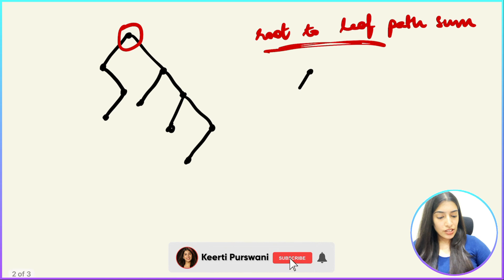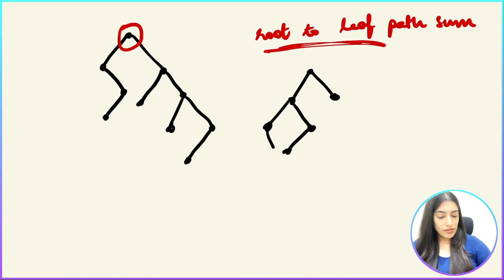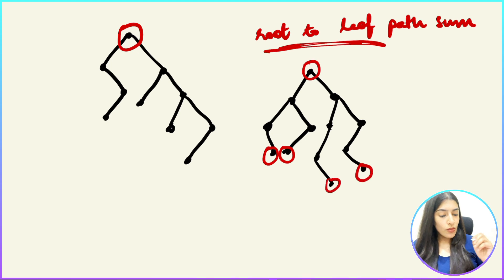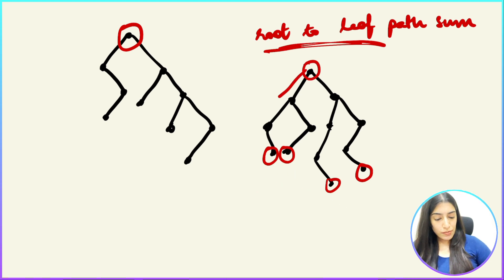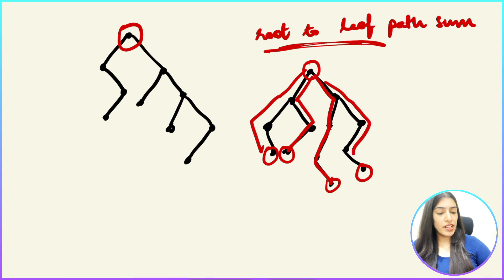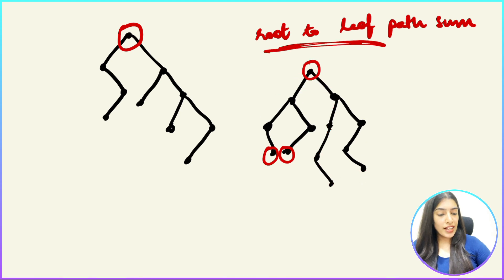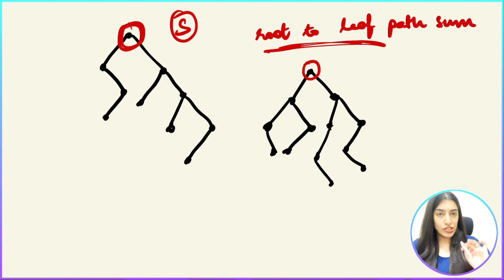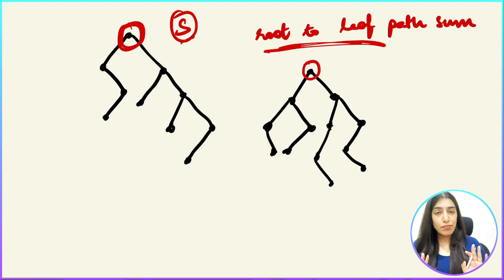Now suppose there is another tree. The root is here and the leaves are the nodes with no children — that is the last node in any path. So we have multiple paths: this one, this one, this one, and this one. We have to check whether any root-to-leaf path has a sum equal to the given s. It is possible that multiple paths have sum equal to s, but we only need to return whether at least one such path exists.